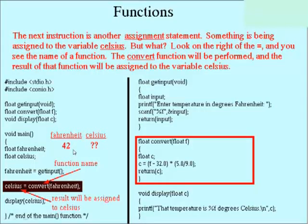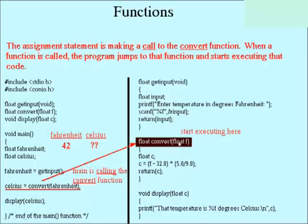When we call those the convert function, it's another function call, it's another assignment statement. So the result of this function is going to be assigned to the variable called Celsius. And again, it's going to go over, start executing here at the beginning of the convert function.